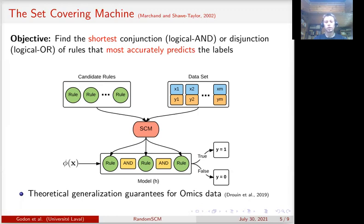The set covering machine is limited to learning a single conjunction of rules. We hypothesize that this may limit its ability to detect more complex biomarkers like metabolic pathways. We therefore propose the random set covering machine.